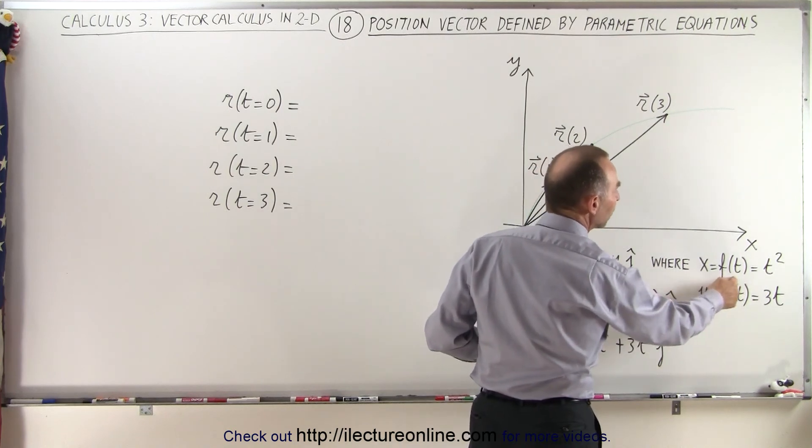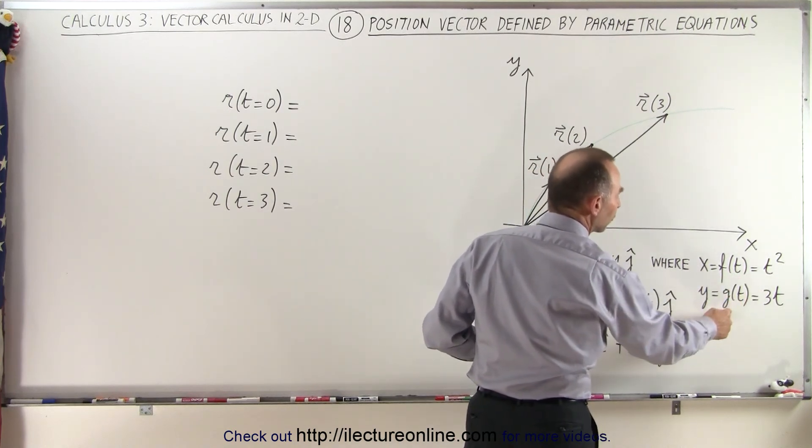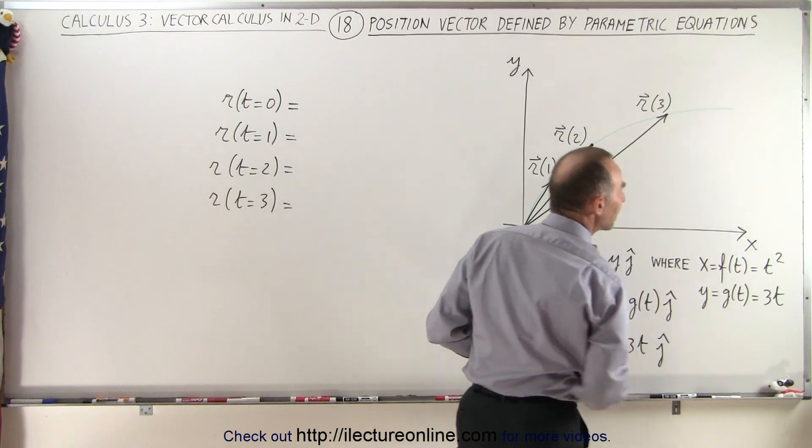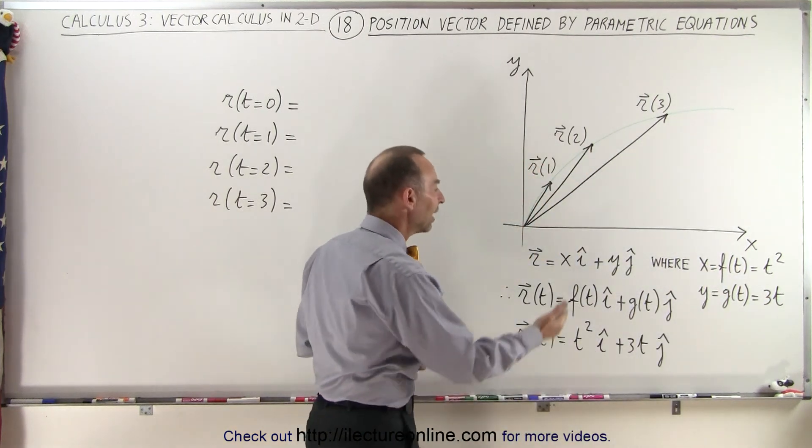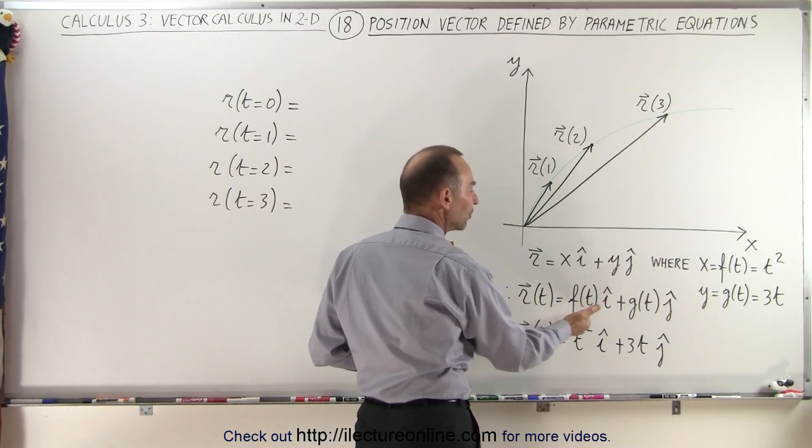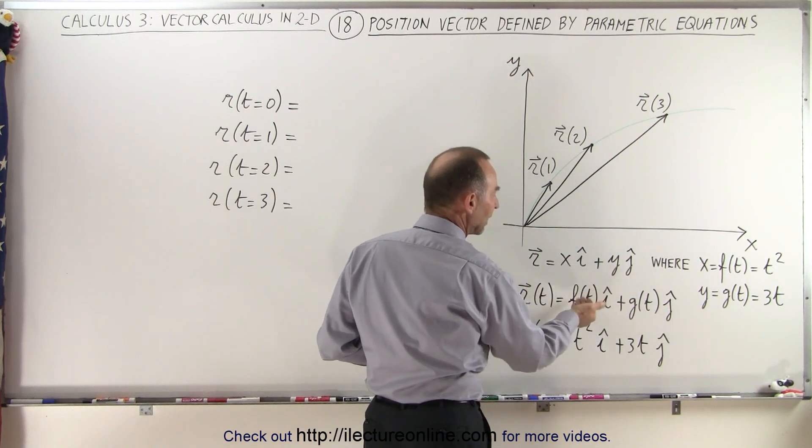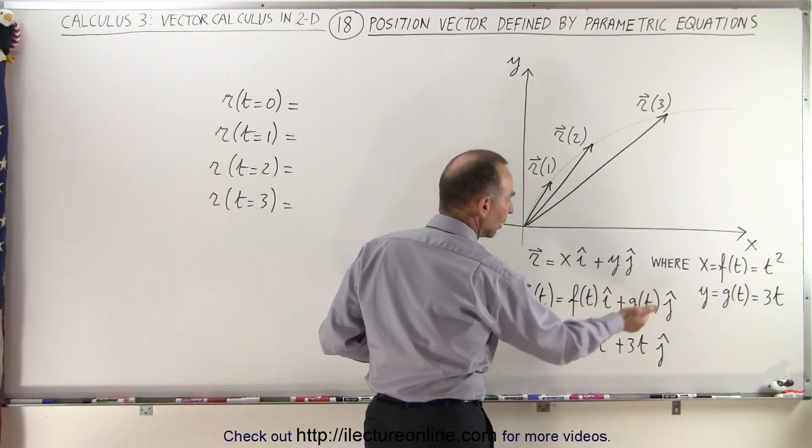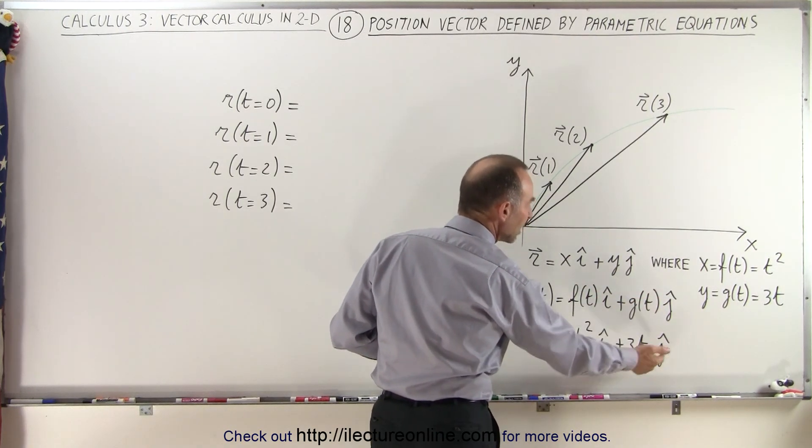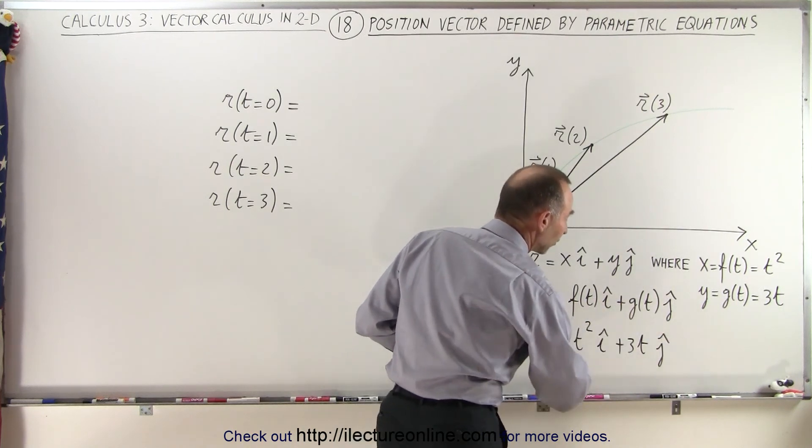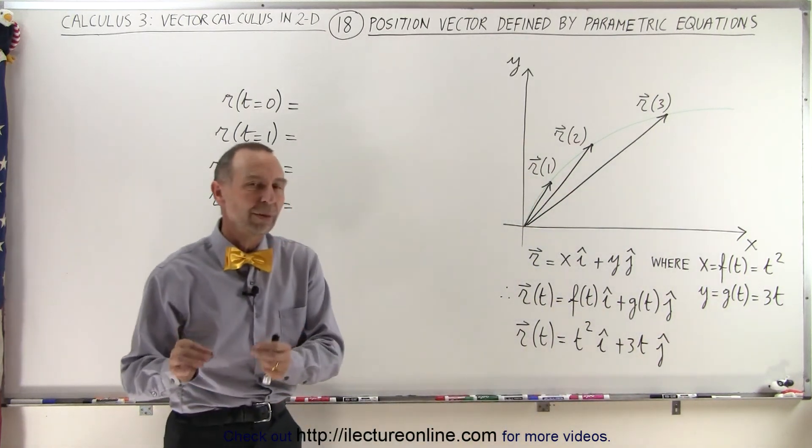And x, the function of t, is equal to t squared, and the other function of t, g of t, is equal to 3t. So then when we replace x and y by the function of t and the other function of t, and then the first function of t is t squared, the second function of t is 3t, so now we have a position vector expressed in terms of its parametric variable.